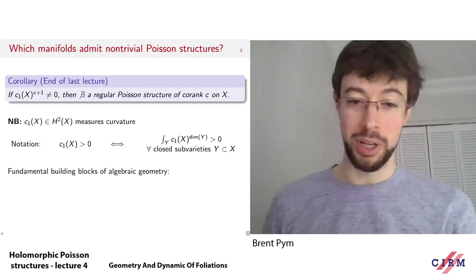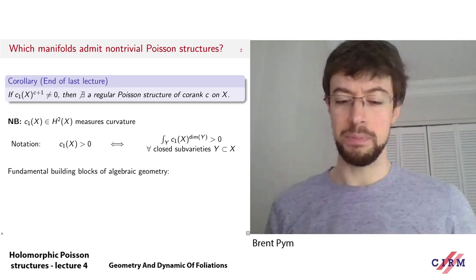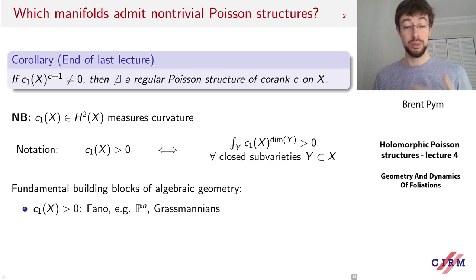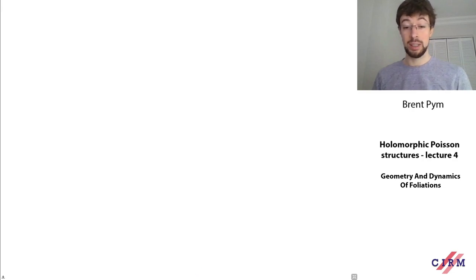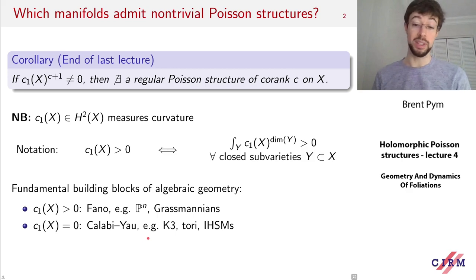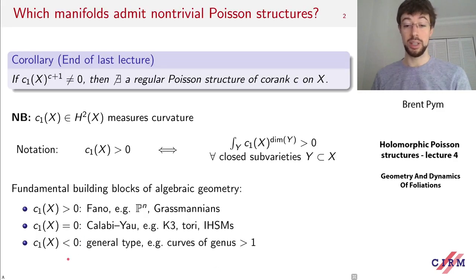There's a big program in algebraic geometry which says every algebraic variety should be built out of pieces with definite curvature. We could have positive curvature — those are the Fano varieties, typical examples being projective space, Grassmannians, or hypersurfaces of low degree. There's zero curvature — the Calabi-Yau manifolds, which include K3 surfaces, complex tori, and irreducible holomorphic symplectic manifolds. And then the opposite extreme — the negatively curved varieties of general type, a typical example being a curve of genus bigger than one.